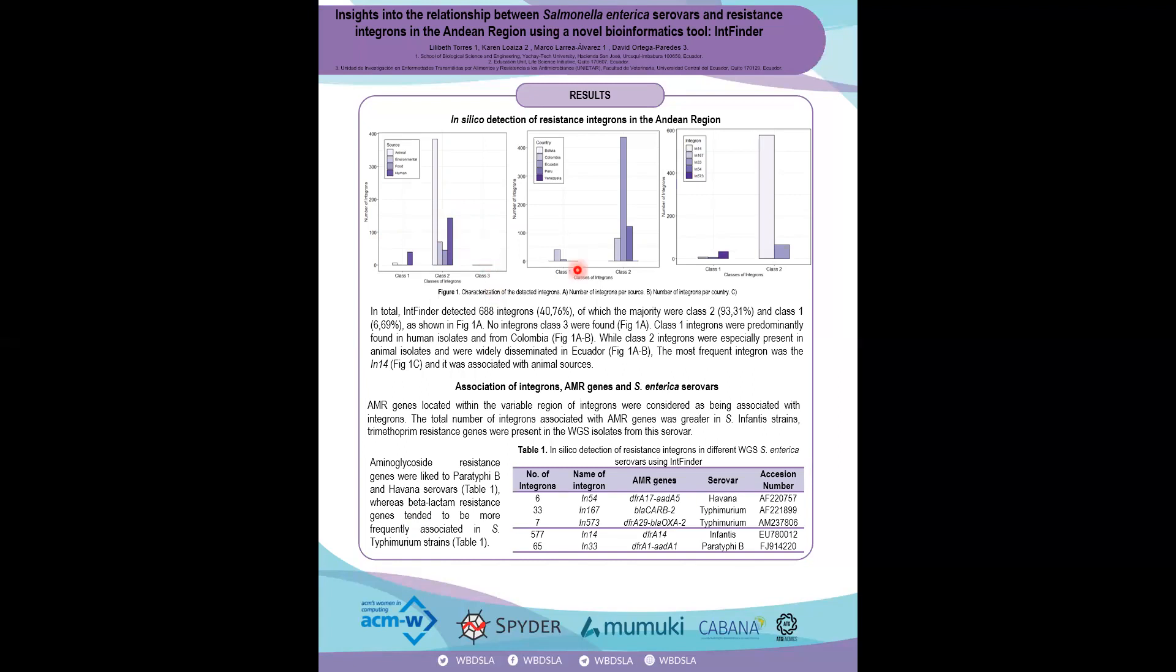The majority of the class 1 integrons were related to human sources and were present in Colombia. The class 2 integrons were related to animal sources and were widely disseminated in Ecuador.